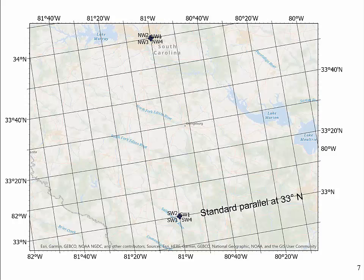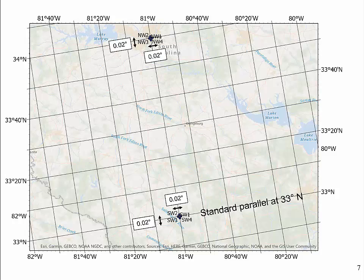To illustrate the principle of determining map accuracy for the Lambert-conformal conic projection, we define two groups of points. The southern group is located on or very close to the lower standard parallel at 33 degrees latitude north. The second point group is located 1 degree north at 34 degrees latitude. To determine map accuracy in different directions, we measure north-south and east-west distances in each point group between corresponding point pairs, which are 0.02 degrees apart. Each distance is measured twice: once on the map and once on the reference surface model.